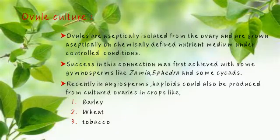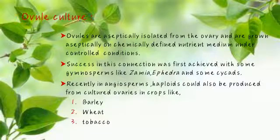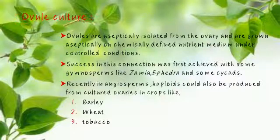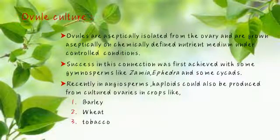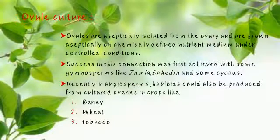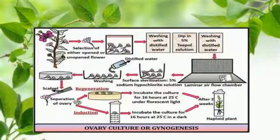Ovule culture: ovules are aseptically isolated and grown on chemically defined nutrient medium under controlled conditions. Success was first achieved with gymnosperms like Zamia, Ephedra, and some cycads. Recently in angiosperms, haploids have also been produced from cultured ovaries in crops like barley, wheat, and tobacco. This area also includes ovary culture and gynogenesis.